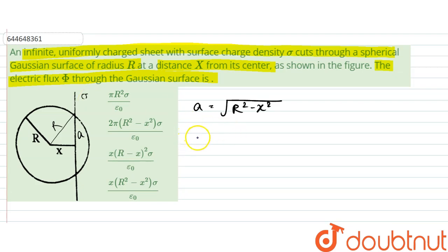So according to Gauss's law, phi is equal to Q enclosed divided by epsilon zero. This is Gauss's law.